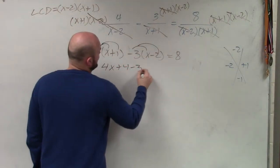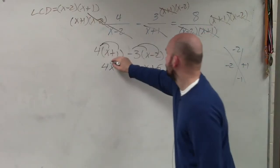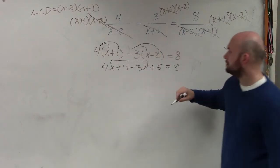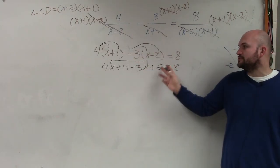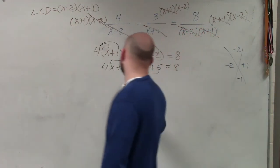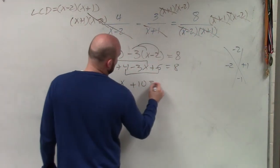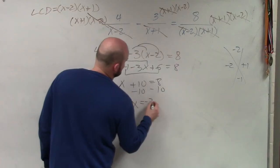This is 4x plus 4 minus 3x plus 6 equals 8. Make sure it's negative 3 times negative 2, which would be positive 6. Combine those and those. I'm left with x plus 10 equals 8. Subtract 10, subtract 10. x equals negative 2.